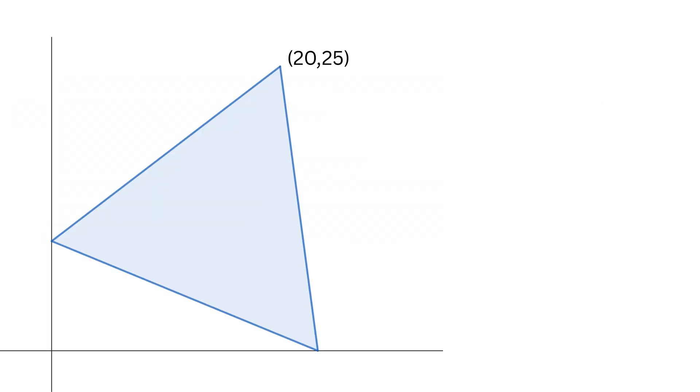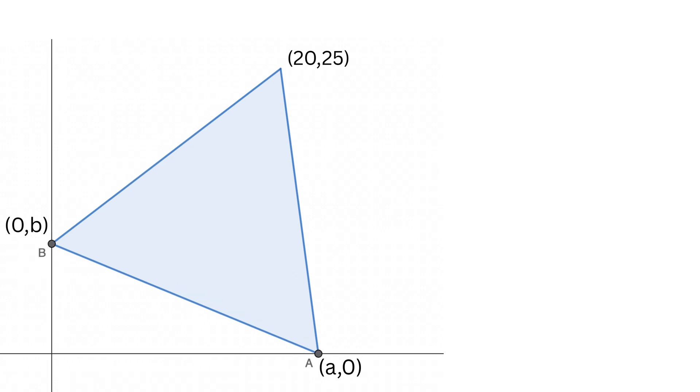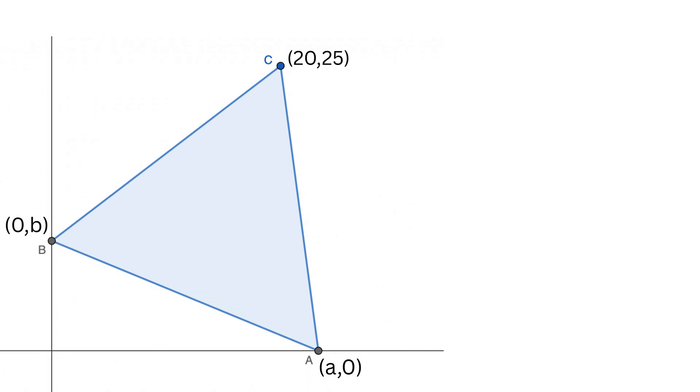Assume the coordinate of the vertex which is on the x-axis is (a,0) and is labeled as A. Then the coordinate of the vertex which is on the y-axis is (0,b) and is labeled as B, and this point is labeled as C.